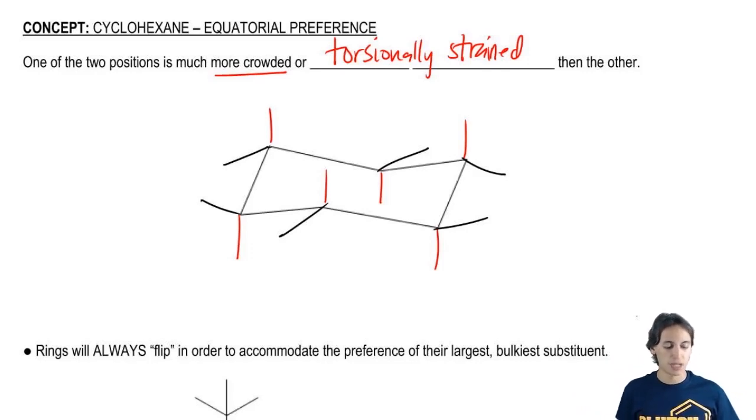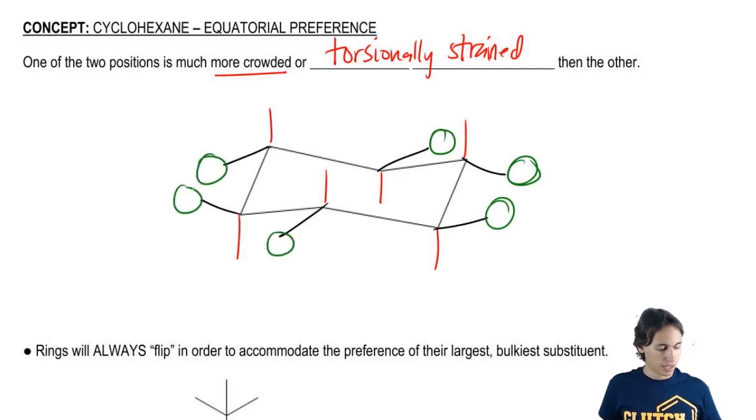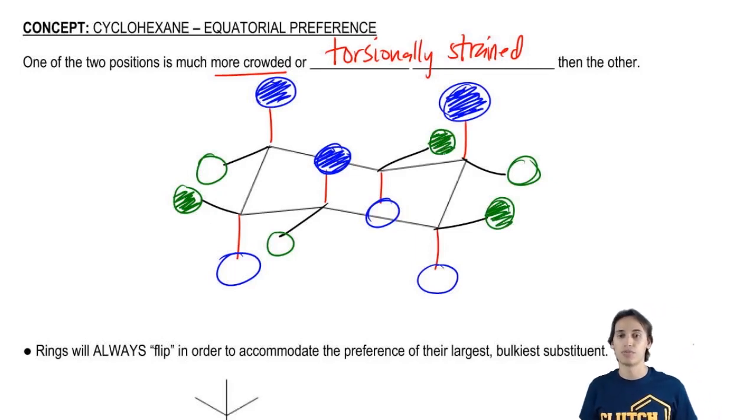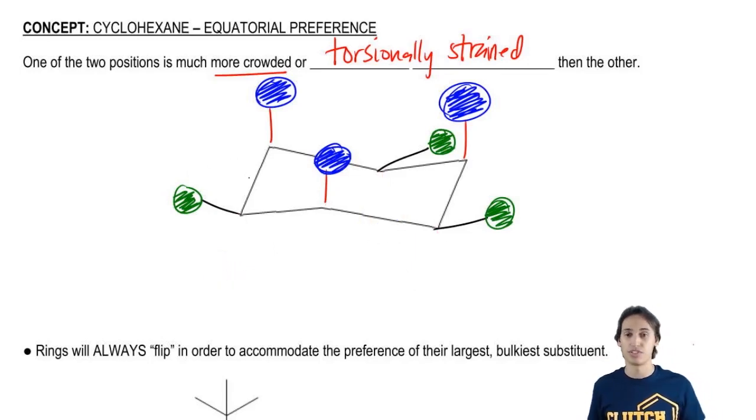And now let's imagine that I put different shapes here. So let's say that I put a bunch of green circles on the equatorial positions and some blue circles on the axial positions. I just want to analyze the ones at the top – this blue circle, this blue circle, and this blue circle versus this green circle, this green circle, and this green circle. Are you guys following so far? In fact, I'm just going to erase the other ones so you don't get distracted so you can really see what's going on here.